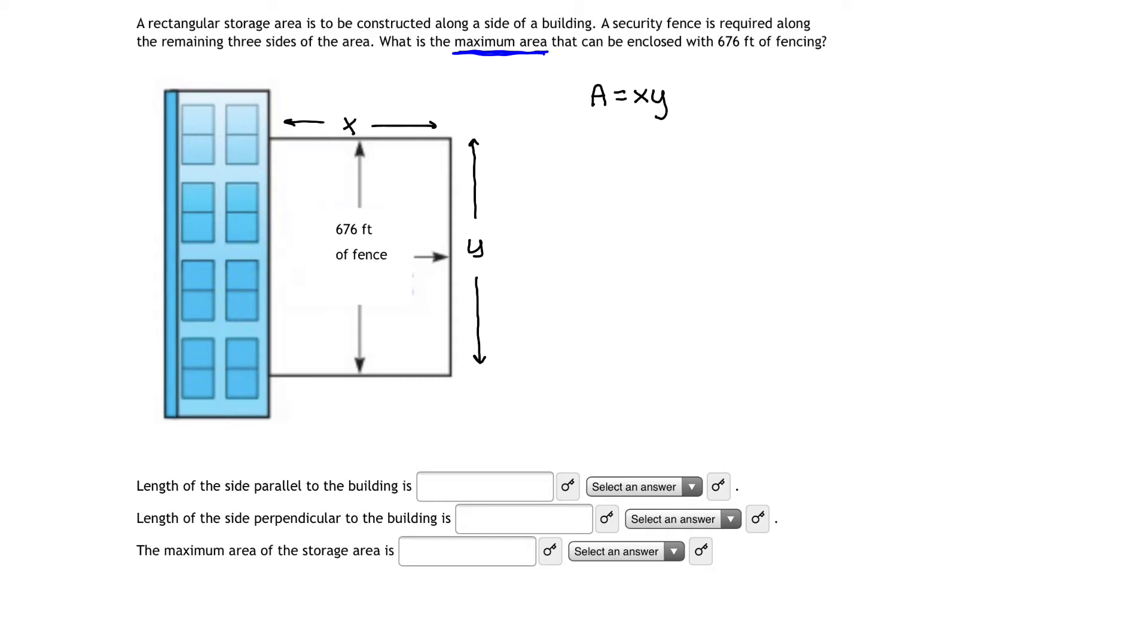Now what do we want to do? We want to take our first derivative. But before that we'd like to rewrite our area function in terms of one variable, either x or y. How can we do that? We're going to use the rest of the information in the problem to help us achieve that.